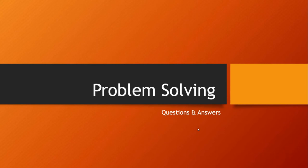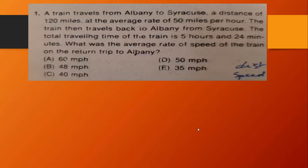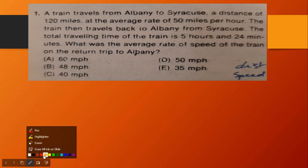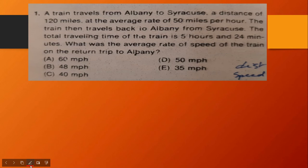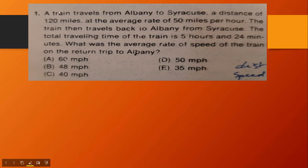Hello guys and welcome. Today we'll talk about problem solving questions and answers. Let's start our first question. A train travels from Albany to Syracuse, a distance of 120 miles at the average rate of 50 miles per hour.